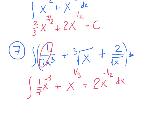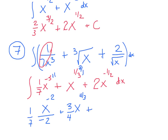Now that everything is rewritten as a power, we integrate. Adding 1 to each exponent: x to the negative 3rd becomes x to the negative 2, divided by negative 2, with the 1 seventh out front. Then x to the 1 third becomes x to the 4 thirds, multiply by 3 fourths. Then 2 times x to the negative 1 half becomes x to the 1 half, multiply by 2. Plus c.